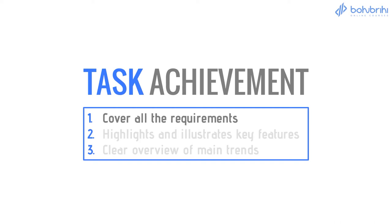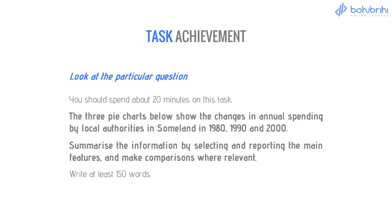Let's look at how an academic question looks. This is a question about information. Looking at the particular question: 'The three pie charts below show the changes in annual spending by local authorities in some land in 1980, 1990 and 2000.' The key instruction says: summarize the information by selecting and reporting the main features and making comparisons where relevant. So the main keywords here are: main features, main ideas, and main comparisons.